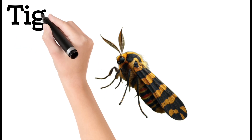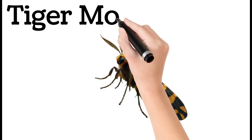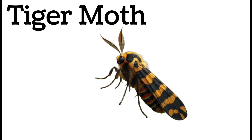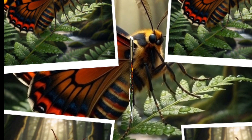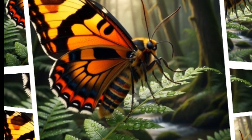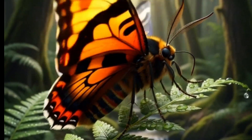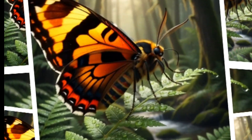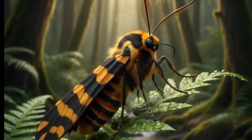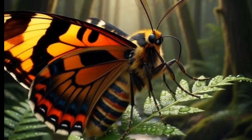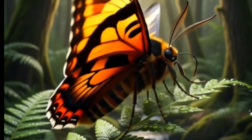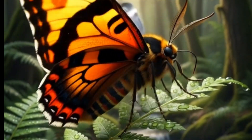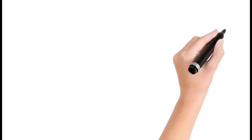Next, tiger moth: brightly colored wings. Larvae are fuzzy woolly bears. Releases chemicals to deter predators. Active at night. Found in forests and fields.